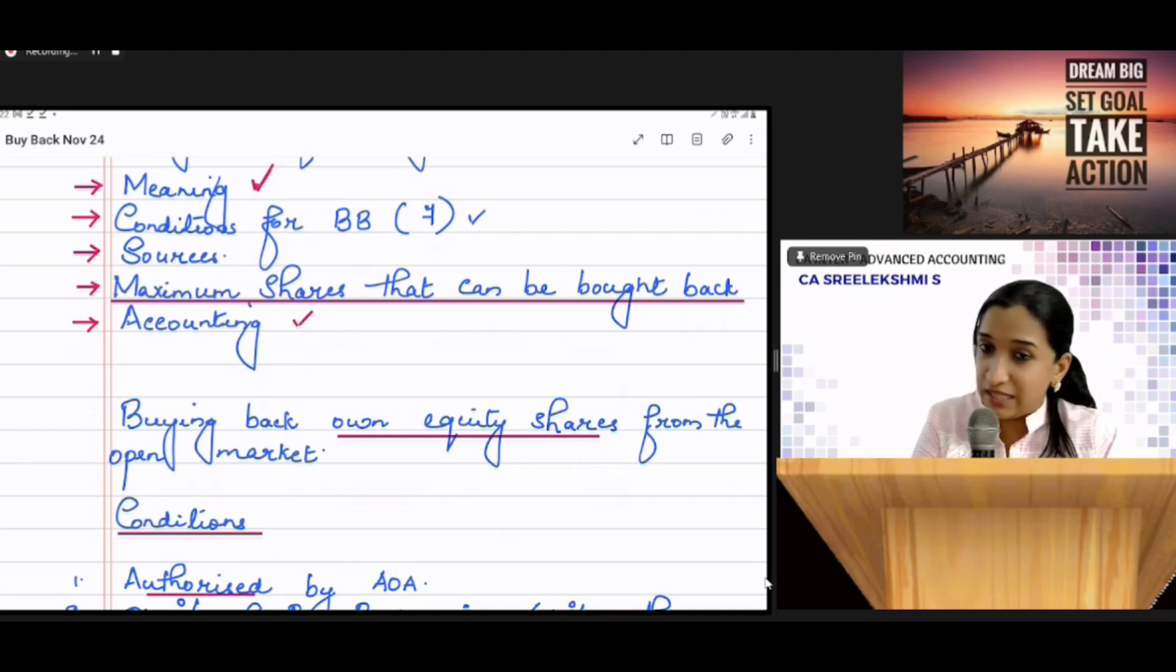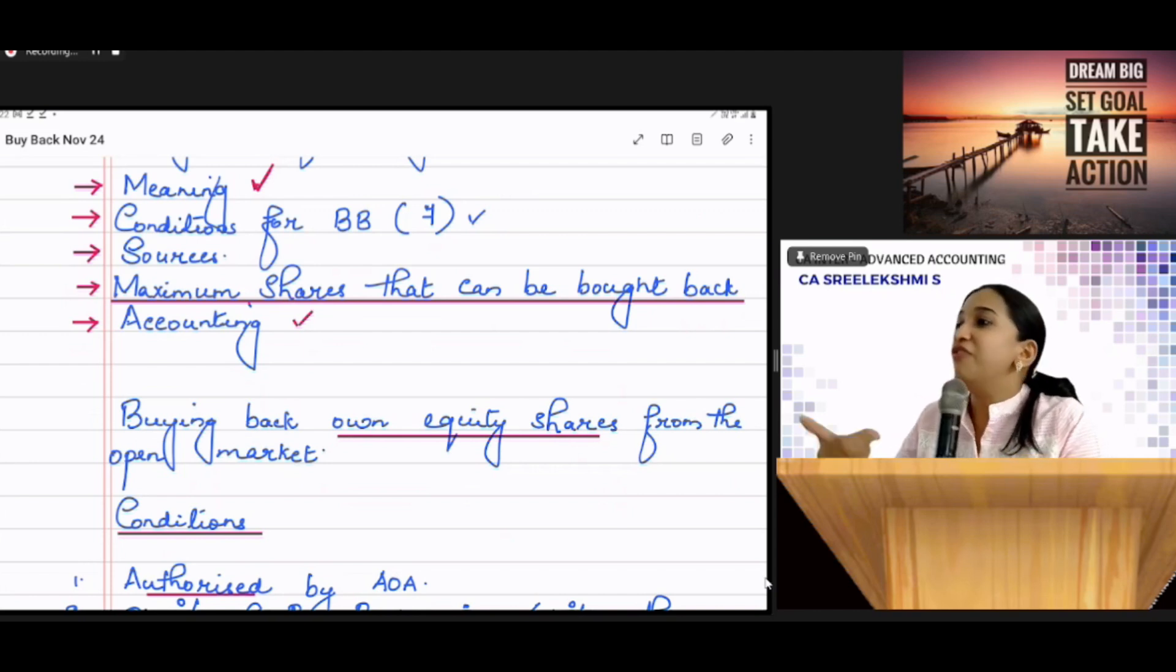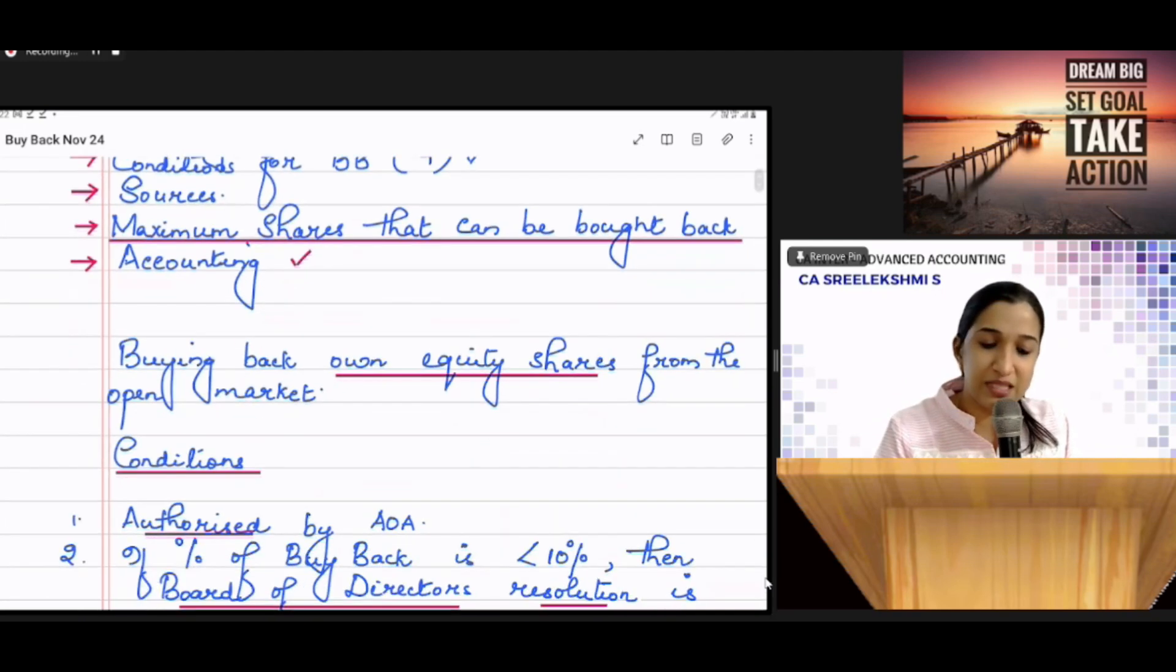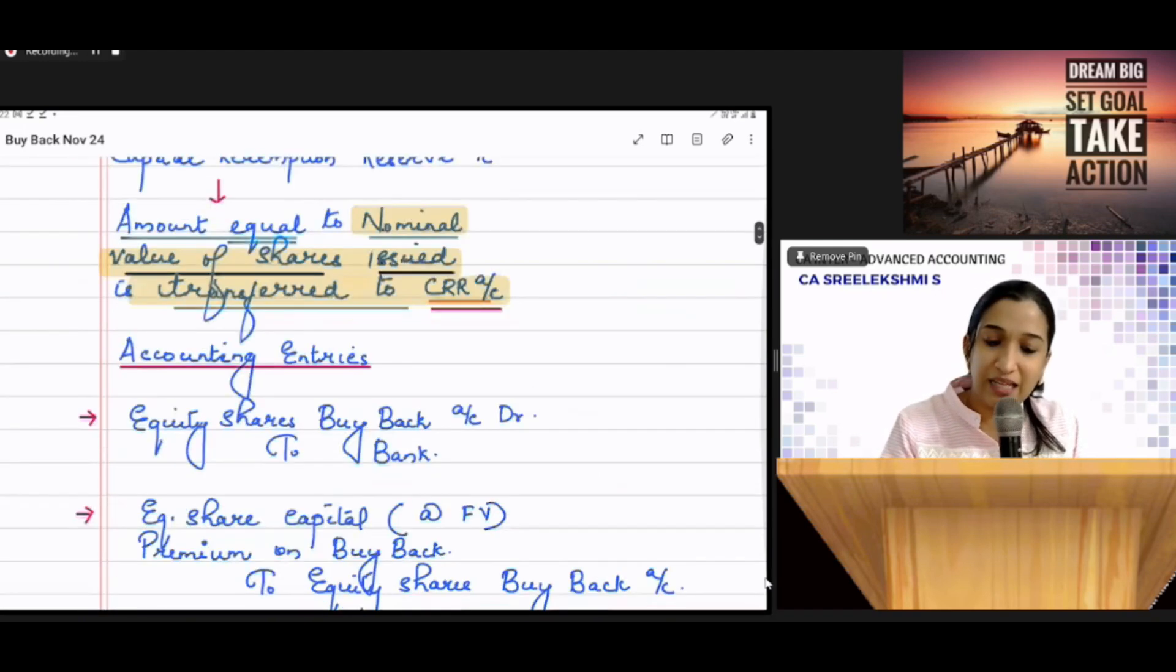Then maximum number of shares that can be bought back. Maximum number of shares that can be bought back is least of three test conditions. One is share outstanding test, which means from the balance sheet given, you take the total number of shares. Multiply by 25%.